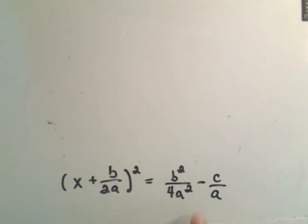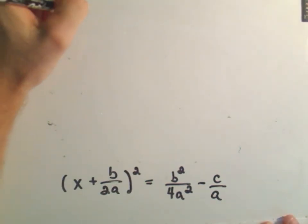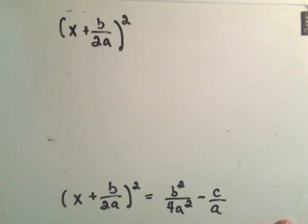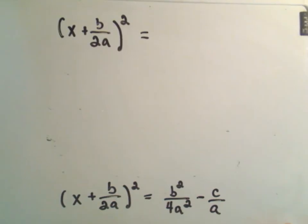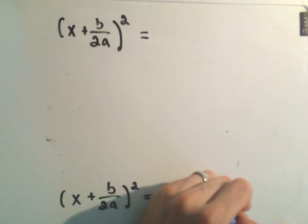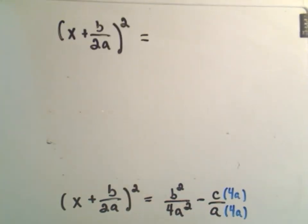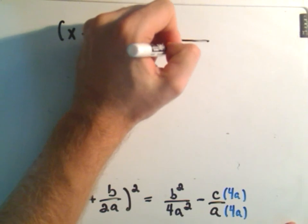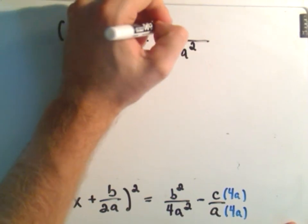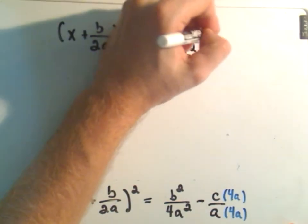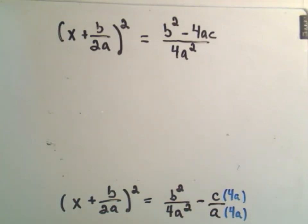What I'm going to do on the right hand side now is just get common denominators to clean it up a little bit. So this is x plus b over 2a squared on the left hand side still. On the right hand side, if I get common denominators, I would have to multiply top and bottom of the c over a by 4a so that I get my 4a squared term. I'll get my common denominator of 4a squared, and then on top I would have b squared minus c times 4 times a, which I can write as 4ac. I think we're starting to get a little closer now.